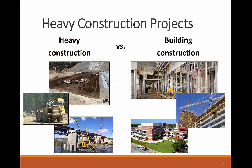The construction industry can be divided into two main sectors: heavy construction and building construction. Heavy construction is also known as horizontal construction, while building construction is mostly vertical. There are multiple differences between these two main industry sectors.